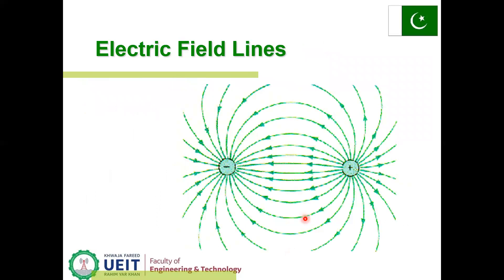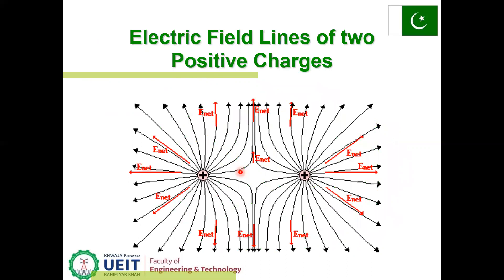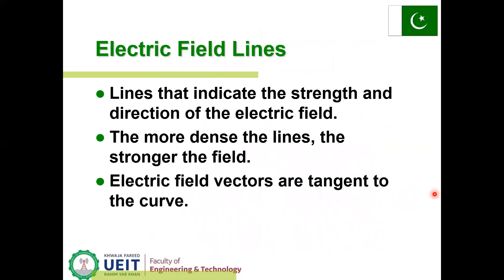Electric field lines: positive charges appear outside in space and go into the negatively accumulated charges. In the next slide, two positive charges are shown and the electric field repels each other, producing a net force. An electric field line indicates the strength and direction of the electric field. The more dense the lines, the stronger the electric field. Electric field vectors are tangent to the curve.